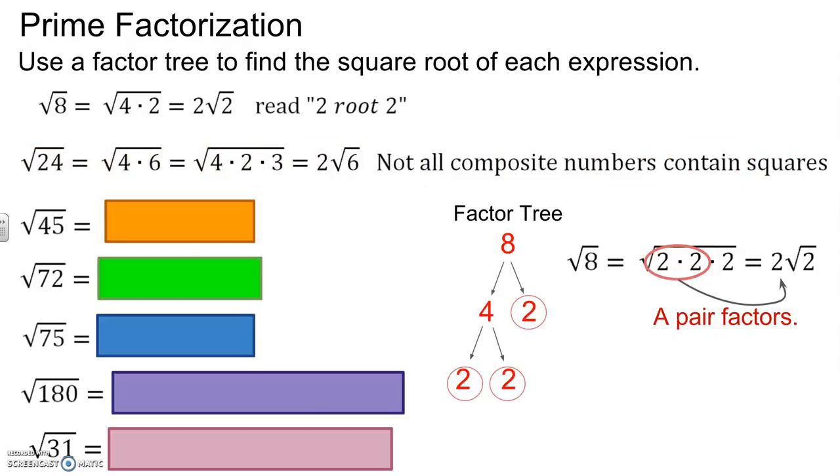So 24 breaks down 4 times 6. 6 breaks down to 2 times 3. So you'll notice here that there's not a lot. 4 is our perfect square. So square root of 4 is 2, but 2 times 3 doesn't have that. So not all composite numbers can be square, so sometimes they have to stay in the radical.